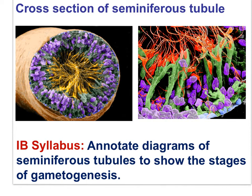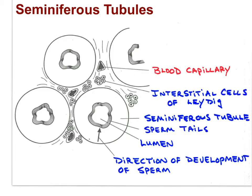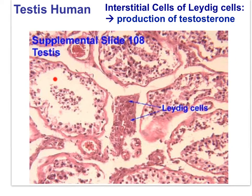This diagram shows the relationship of seminiferous tubules with the interstitial cells of Leydig, which produce testosterone. The presence of capillaries makes sense, as the interstitial cells of Leydig are endocrine — testosterone is released into the bloodstream. You can see the direction of meiosis as part of spermatogenesis, and the flagella of developing spermatids. In this micrograph, we can see seminiferous tubules and interstitial cells of Leydig that lie between the tubules.